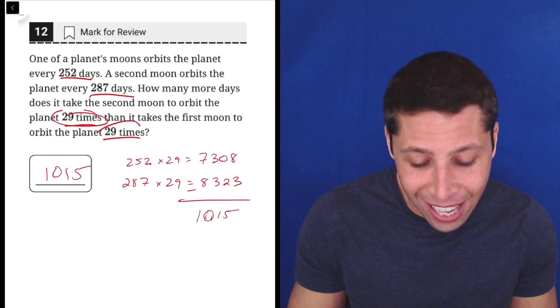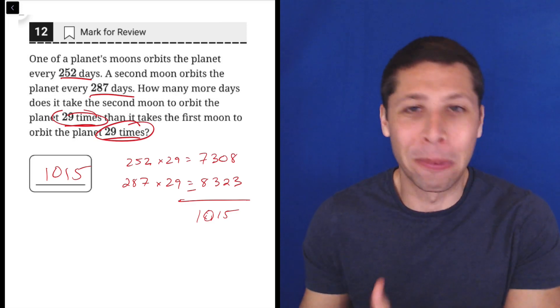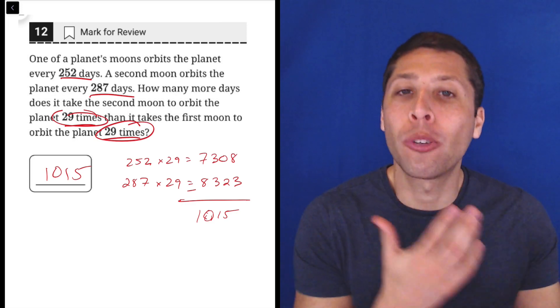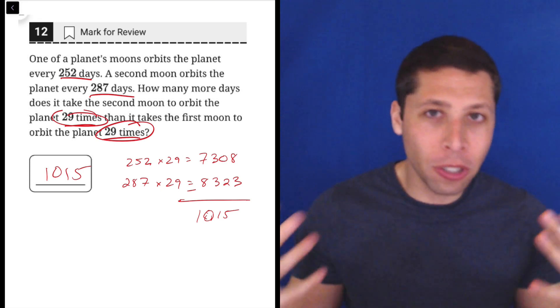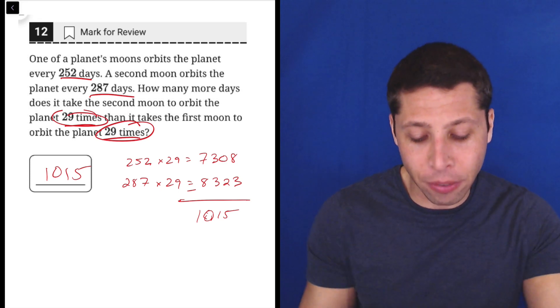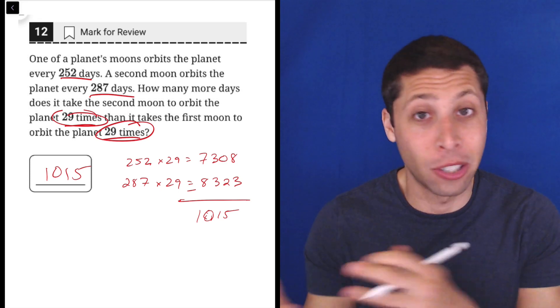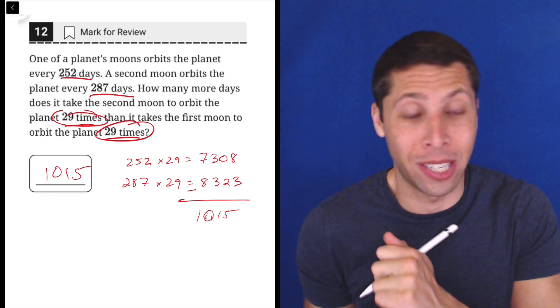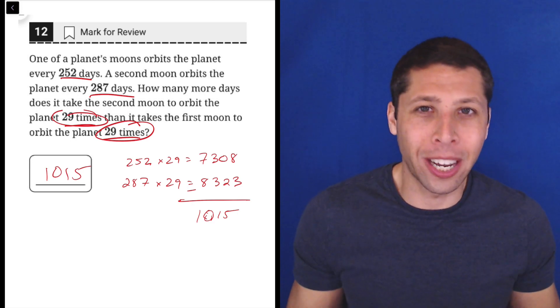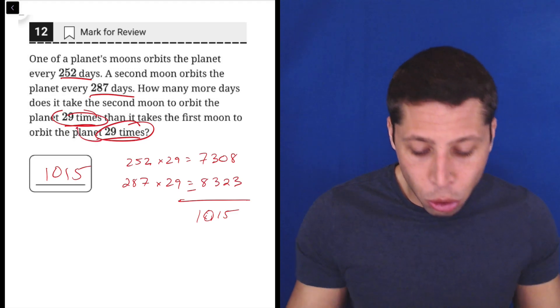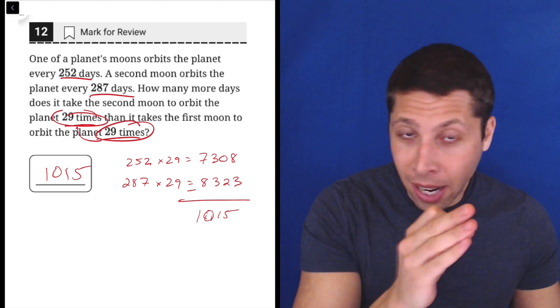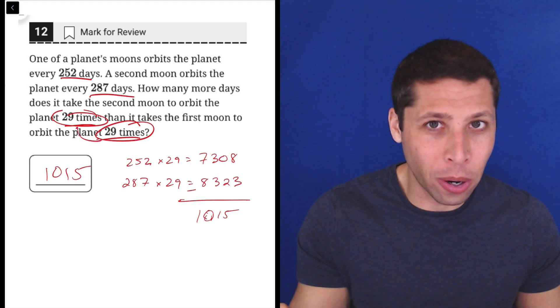They literally say 29 times—just multiply and let it be 29 times. Yeah, I'm sure there are shortcuts where you can get the difference between 252 and 287 to start and then multiply that by 29, but I don't think that's much of a shortcut. That's not really saving you any time, and if they twisted it where it wasn't 29 for each moon, that wouldn't work.